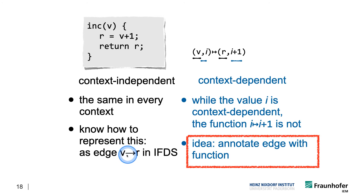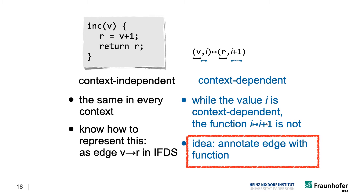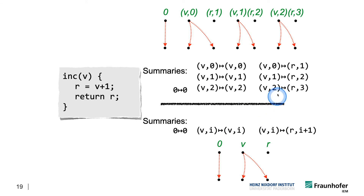In particular, we would annotate an edge from V to R — representing that some value is flowing from V to R — with this function that tells us what kind of value is flowing there. So this is basically saying: as the value flows from V to R, I increment it by one. And it doesn't matter which value it is, because that value I'm quantifying over, abstracting from using this free variable i.